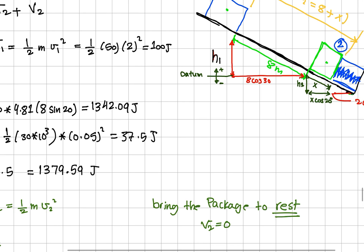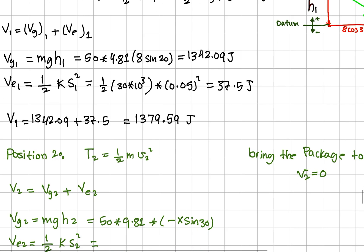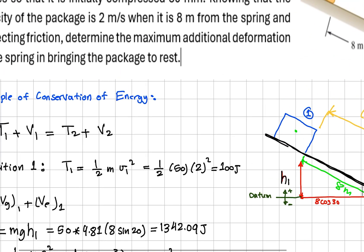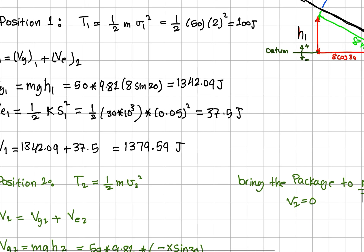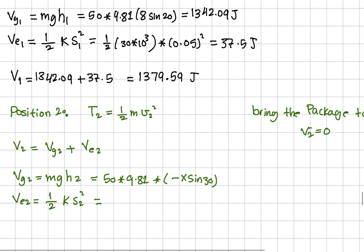We go to position 2. What is the kinetic energy at this position? The kinetic energy is half mv2², and we know it's stated here to bring the package to rest. That means the velocity here equals zero, so the kinetic energy equals zero.